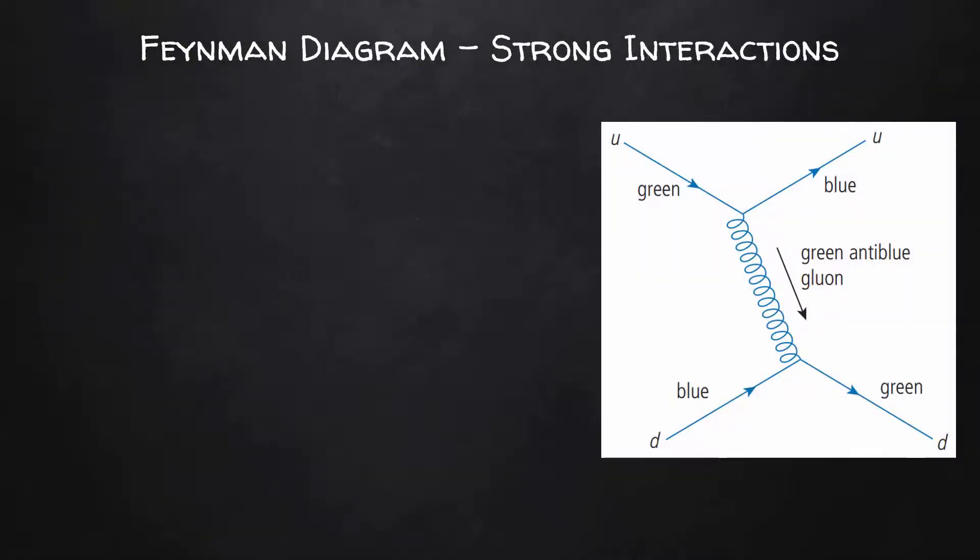Here's our example of the Feynman diagram for a strong interaction. This Feynman diagram shows an interaction between an up quark and a down quark. These could be perhaps an up quark and a down quark within a proton or within a neutron. The gluon that's being transmitted between them is holding them together. As we've seen before, the arrows here are pointing forward in time so we can interpret these as particles, not anti-particles.